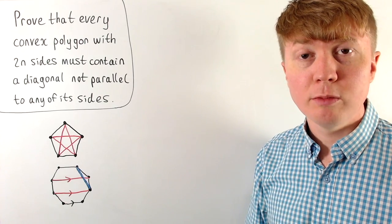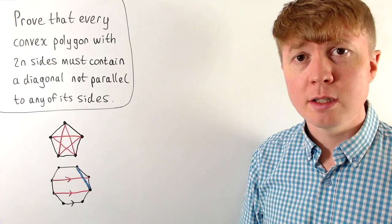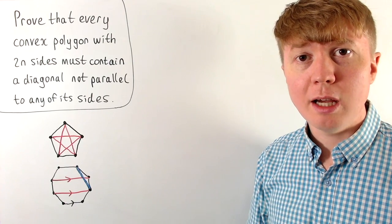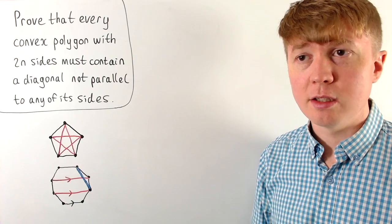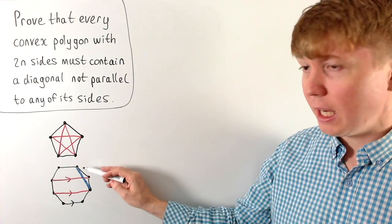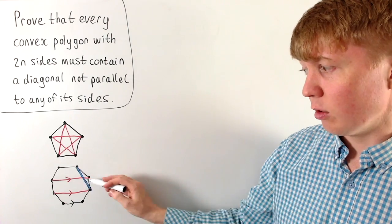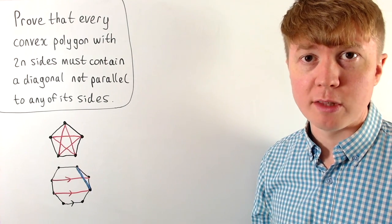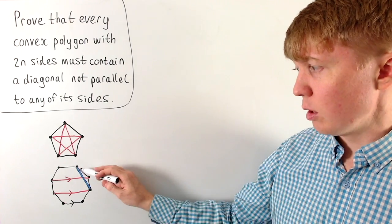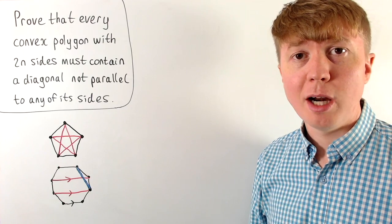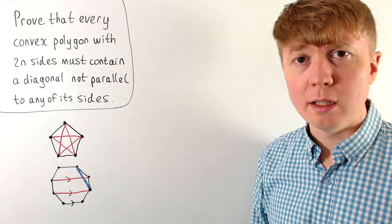We're going to solve this problem where we have a convex polygon with an even number of sides, and we want to show that it's always going to have at least one diagonal which isn't parallel to any of its sides. For example, for this octagon here, the diagonal in blue isn't parallel to any of the sides, whereas the diagonals in red are parallel to one of the sides. We want to show there's always going to be at least one diagonal like the blue one, which is not parallel to any of the sides, as long as we have an even number of sides.